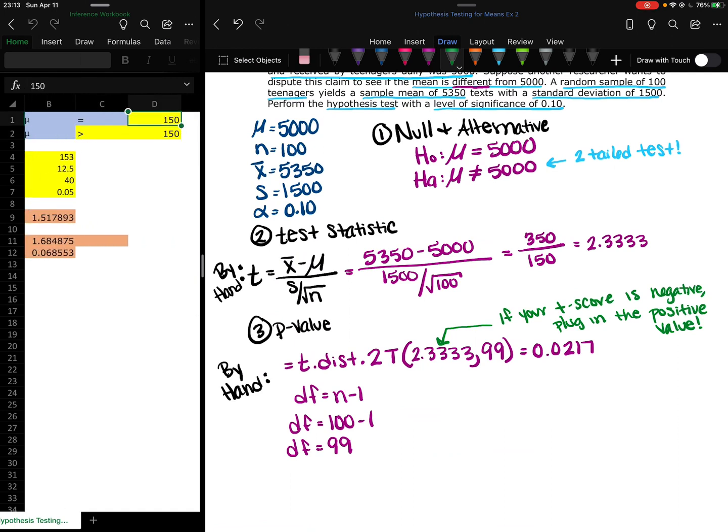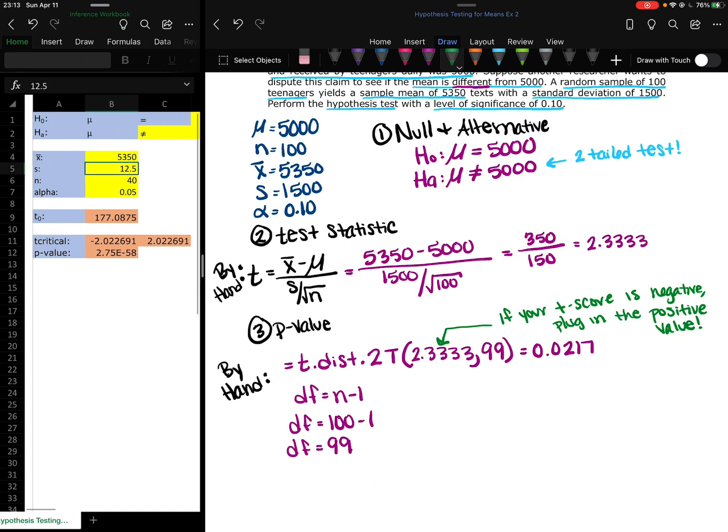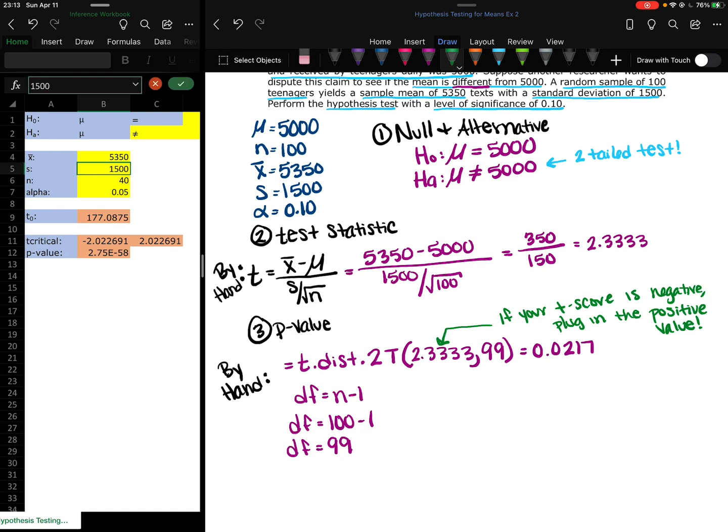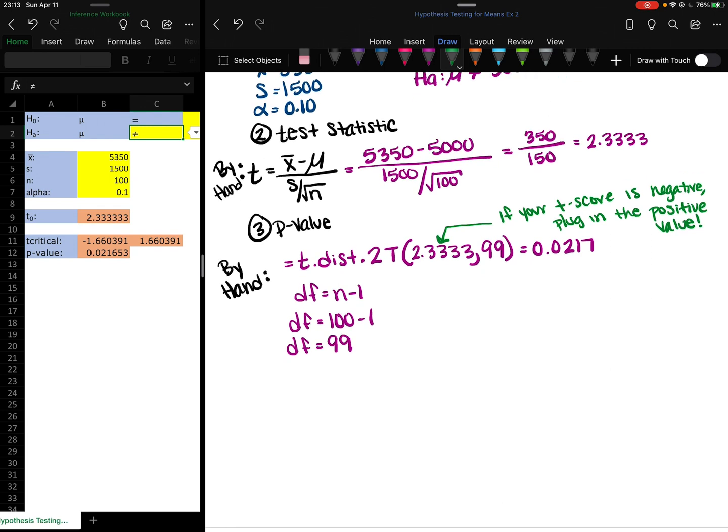I don't know why it wasn't working. So this is 5000 and 5000. This is not equal to. This was 5350. The standard deviation is 1500 and we sampled 100 people and our alpha is 0.1. So T₀, 2.3333. P-value, 0.0217. These T-criticals, the negative 1.6604 positive, you can ignore those. That's using the other method for hypothesis testing that I'm not teaching you. So Excel gave us the same values.